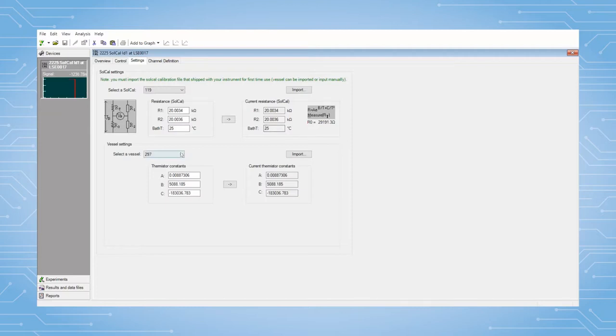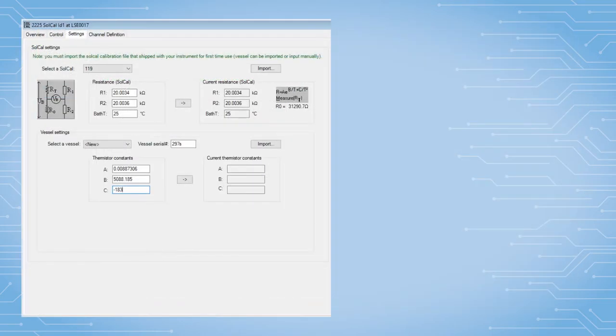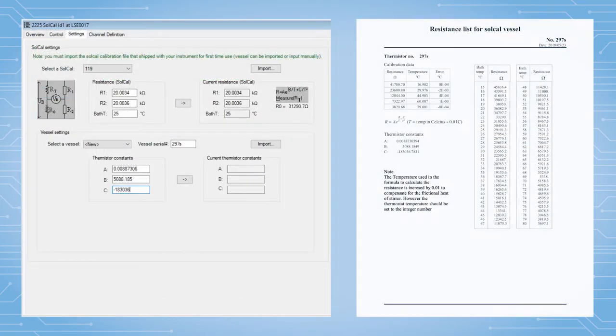If needed, the vessel device file can be imported into the software by pressing the import button, or it can be created by entering the values from the SolCal vessel resistance list that is supplied with the SolCal vessel.